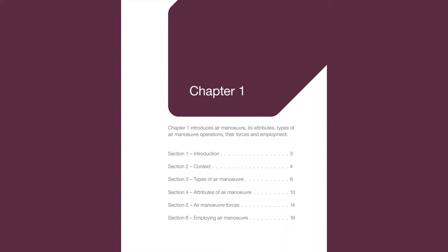Chapter 1 introduces Air Maneuver, its attributes, types of air manoeuvre operations, their forces and employment. Chapter 1 consists of six sections: Section 1 Introduction, Section 2 Context, Section 3 Types of Air Maneuver, Section 4 Attributes of Air Maneuver, Section 5 Air Maneuver Forces, and Section 6 Employing Air Maneuver. A quotation from General Rupert Smith KCB, DSO, OBE, QGM.